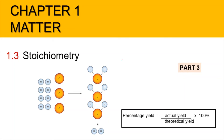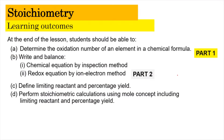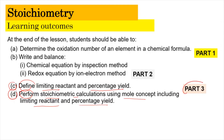Hi, assalamualaikum and a very good morning. We are still in chapter one, and now we're going to focus on subtopic 1.3 stoichiometry, part three of the video. In this video we're going to look into the definition of the limiting reactant as well as the percentage yield, and perform stoichiometry calculations using the mole concept. The learning objectives C and D will be covered here, while A and B were covered in part one and two respectively.